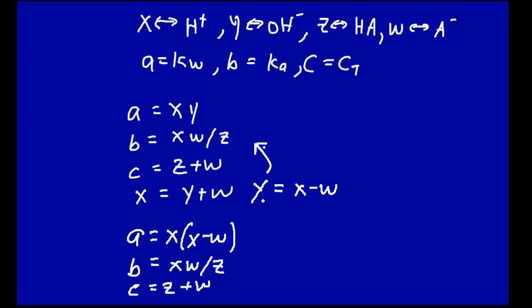Let's use this equation, w = c - z, and then plug in where w appears, right there and right there. We do that, we then reduce it to two equations and two unknowns. a = x(x - c + z), b = x(c - z)/z. Two equations, two unknowns, x and z. Recall that a, b, and c are our constants.